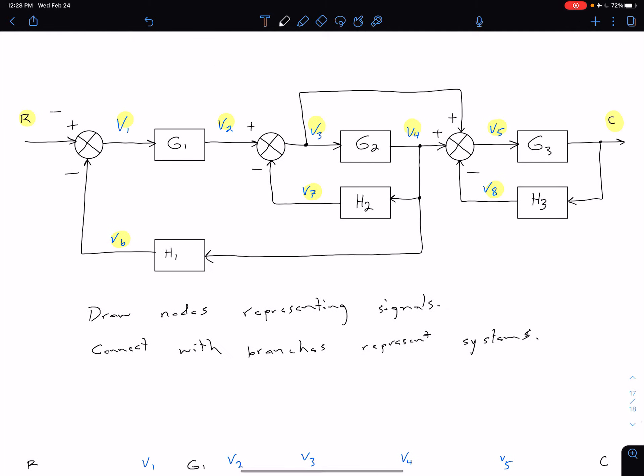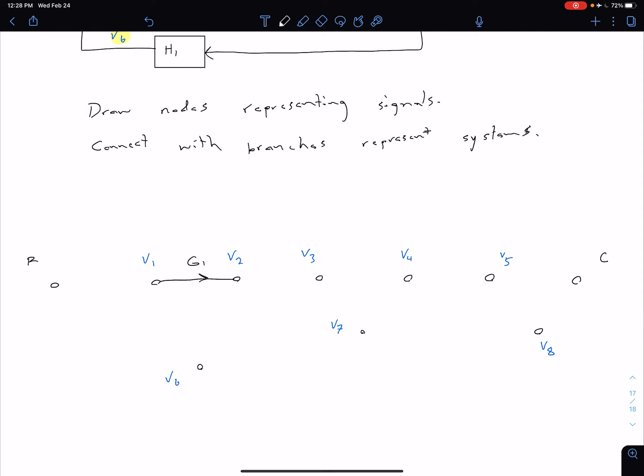We also have this R, which is coming into V1. Note that it's being added, so it's just going to be multiplied by one. So we just have something that looks like this, and our gain on that is just going to be one.